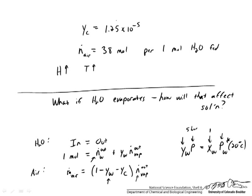That will affect our answer by a very small percentage. The air flow rate is around 38 moles, so even if y_W is a few percent, the overall flow rate will only change by a few moles. Looking up the vapor pressure of water at 20 degrees C, we see it is around 0.025 bar, so y_W equals 5.1 times 10 to the minus 3. That is a very tiny fraction — 5.1 times 10 to the minus 3 times 38 is a relatively small number compared to 1 mole — so our assumption was pretty good.